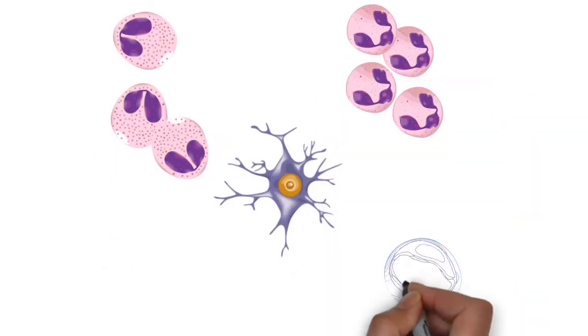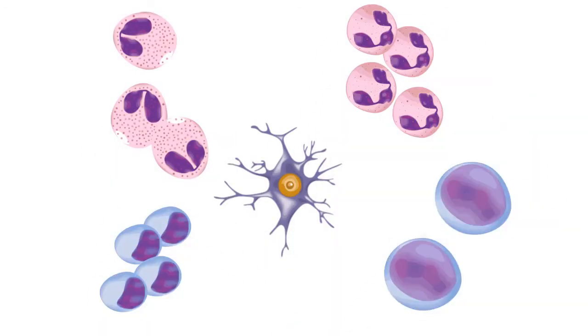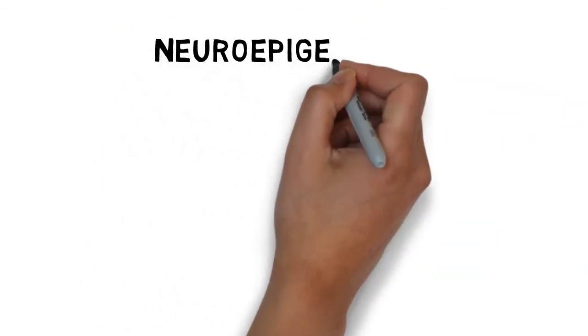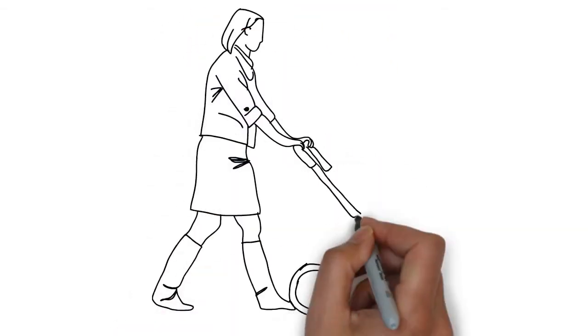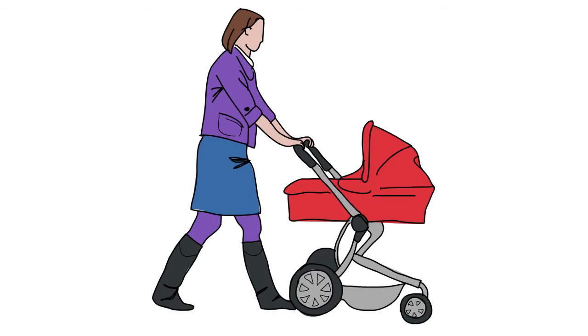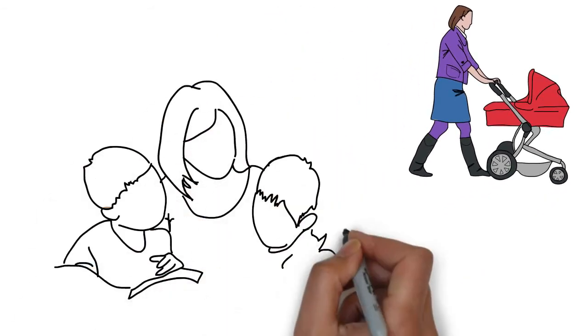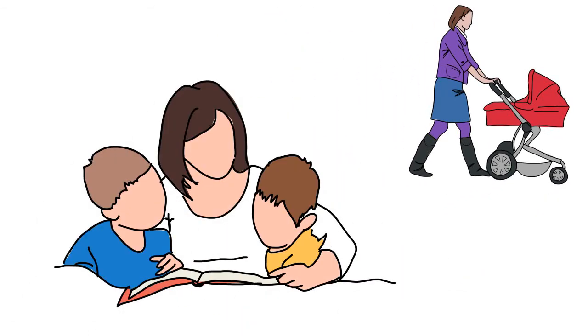While epigenetic modifications occur in all cells in the body, neuroepigenetics refers to modifications occurring in the central nervous system. For example, environmental stimulation, such as maternal care, can enhance the brain's ability to adapt, which primes the brain for improved learning.